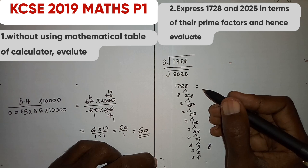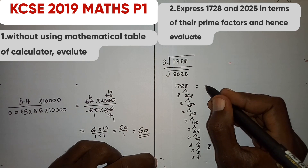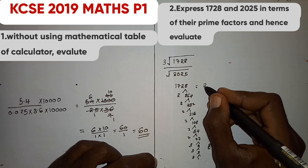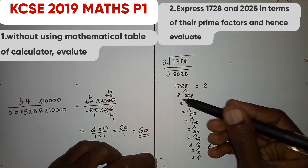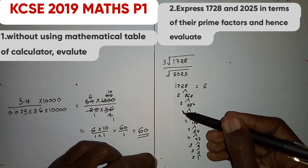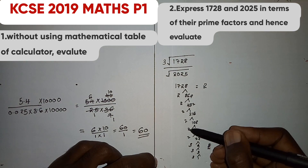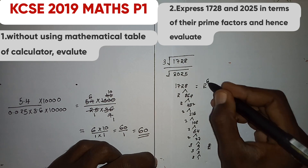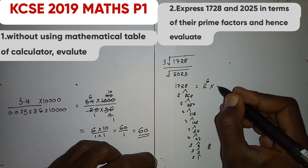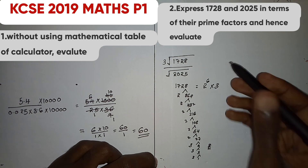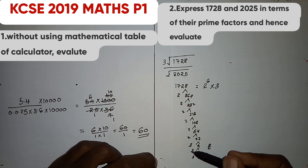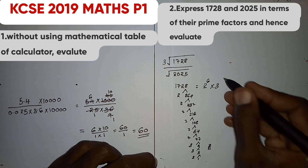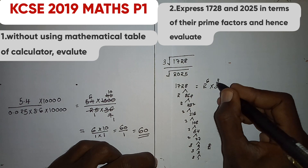Therefore, the prime factors of 1728 are 2 to the power 6 multiplied by 3 to the power 3.